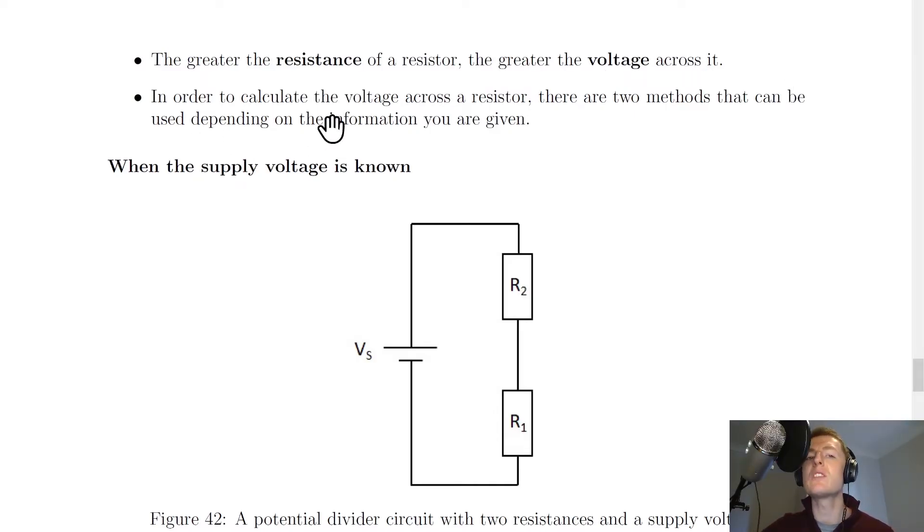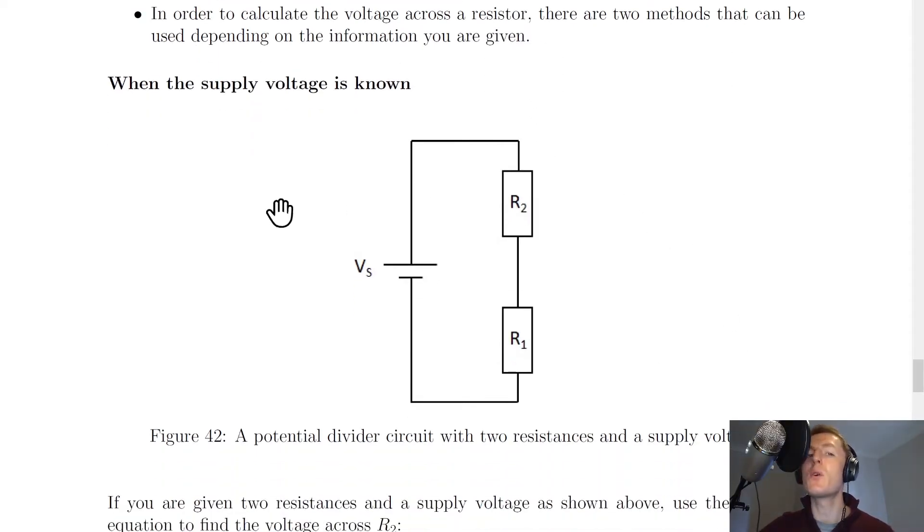In order to calculate the voltage across a resistor, there are two methods that can be used depending on the information that you're given. The first method we're going to look at is when the supply voltage is known, which basically just means we're given a value of the supply voltage VS, of the battery voltage.